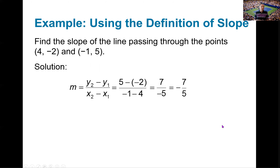Let's look at an example. I give you the ordered pair (4, -2) and the ordered pair (-1, 5), so there will be a defined slope. My slope formula tells me to take y₂ minus y₁: 5 minus negative 2, over x₂ minus x₁: negative 1 minus 4. Well, 5 minus negative 2 is the same as 5 plus 2, giving me 7 in the numerator. Then negative 1 minus 4 gives me negative 5 in the denominator. I prefer the negative out front, so the final answer is negative 7 fifths.